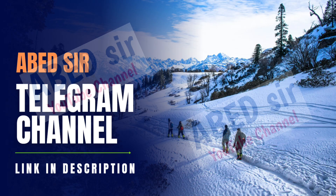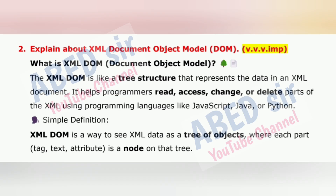Next important long question: Explain about XML Document Object Model — DOM. The XML DOM is like a tree structure that represents the data in an XML document. It helps programmers read, access, change, or delete parts of the XML using programming languages like JavaScript, Java, or Python. XML DOM is a way to see XML data as a tree of objects, where each part — tag, text, attribute — is a node on that tree.